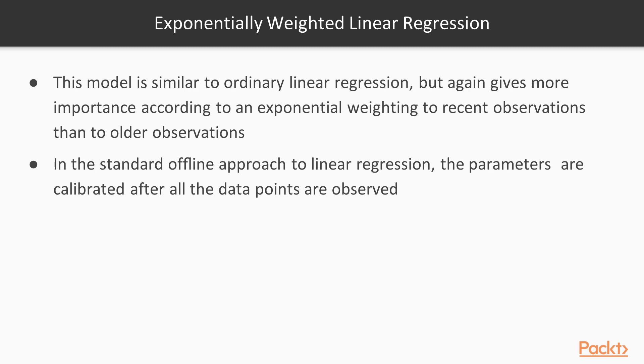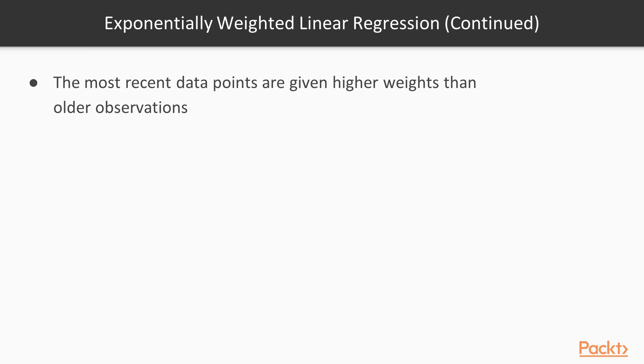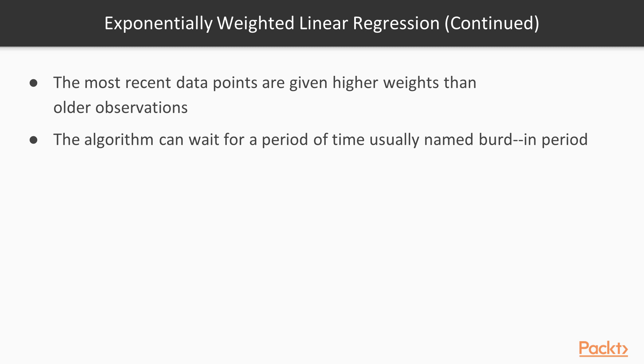In the standard offline approach to linear regression, the parameters are calibrated after all the data points are observed. On the contrary, for one-pass algorithm to calculate the exponentially weighted linear regression, the equations must be rewritten in a recursive way. The most recent data points are given higher weights than older observations. The algorithm can wait for a period of time, usually named burn-in time or burn-in period. This allows sufficient observations to accumulate so that the result is reliable.